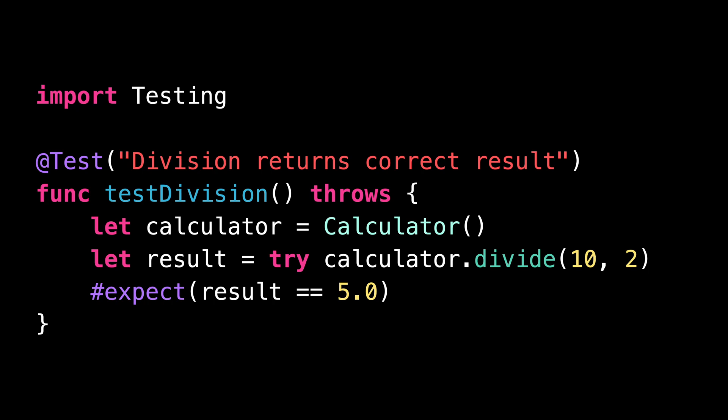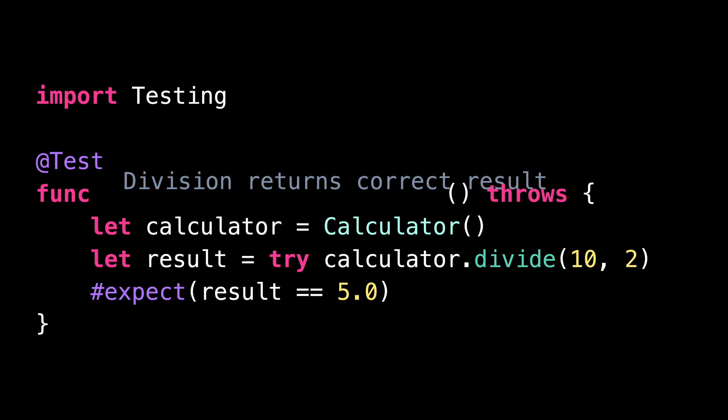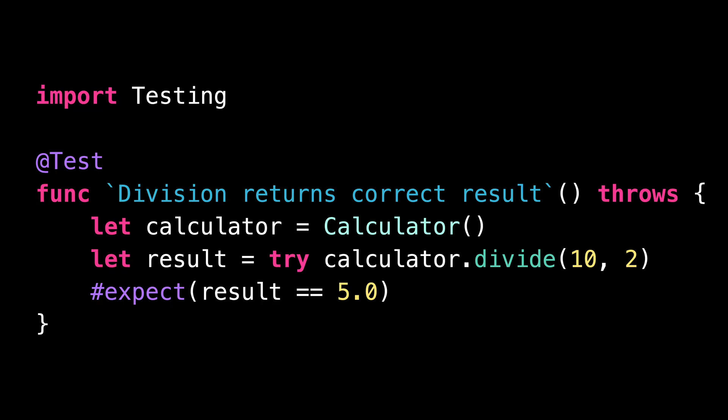The good news is that since Swift 6.2, this has become possible. Indeed, Swift 6.2 now supports using raw identifiers for function names, which allows us to directly use the description of the test as the function name.